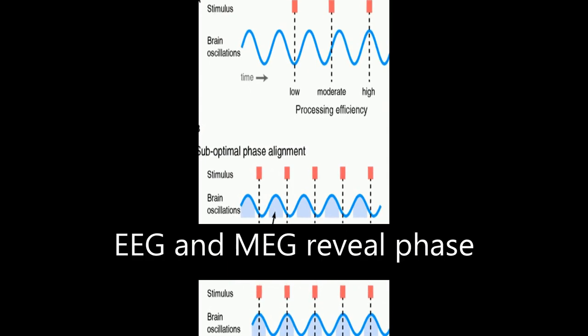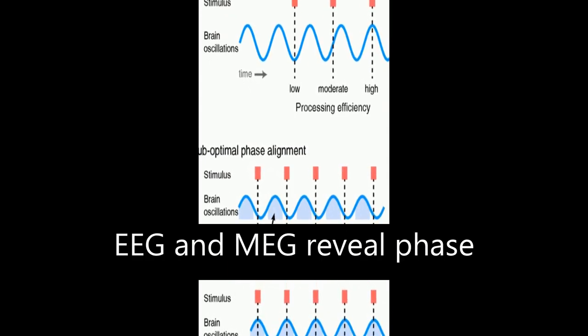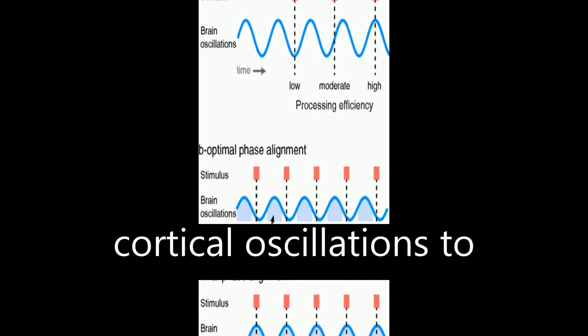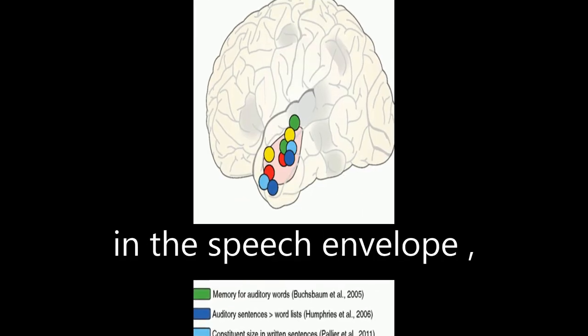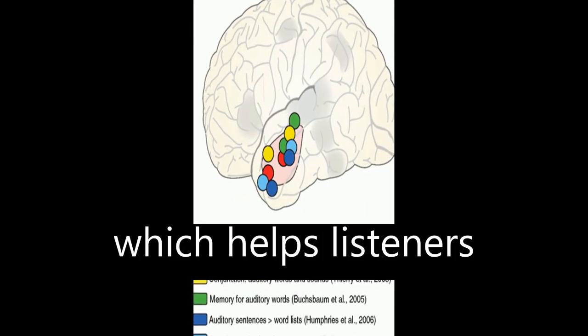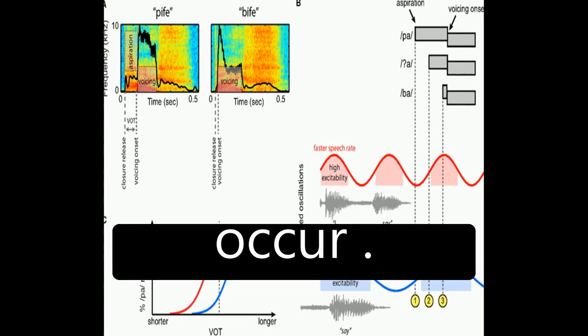Neuroimaging data from EEG and MEG reveal phase locking by ongoing cortical oscillations to low frequency information in the speech envelope, which helps listeners predict when important events are likely to occur.